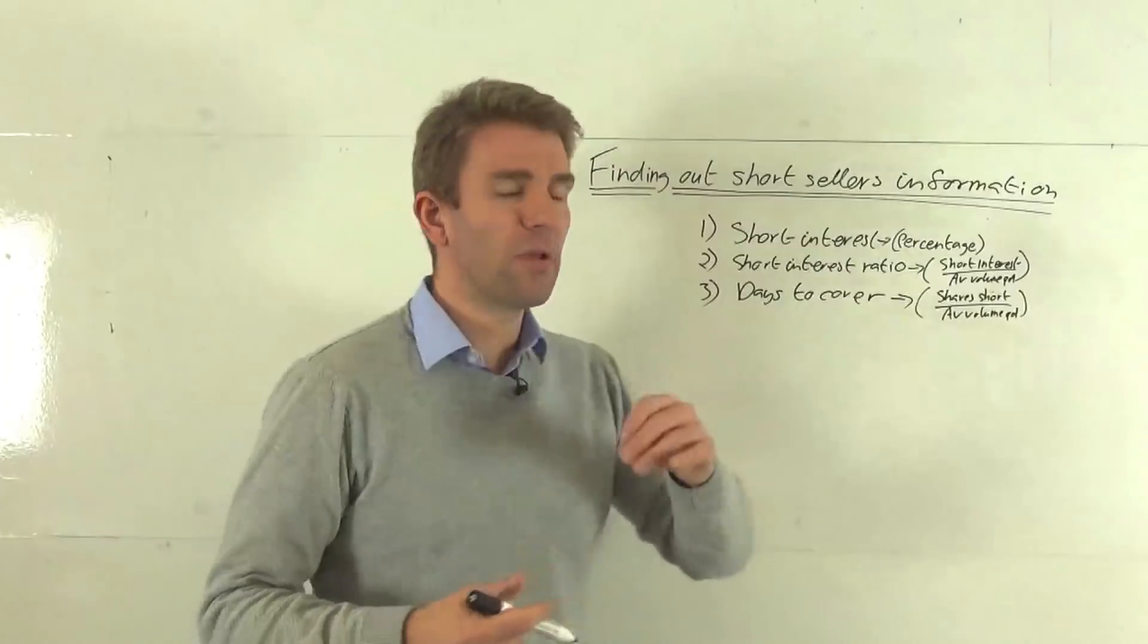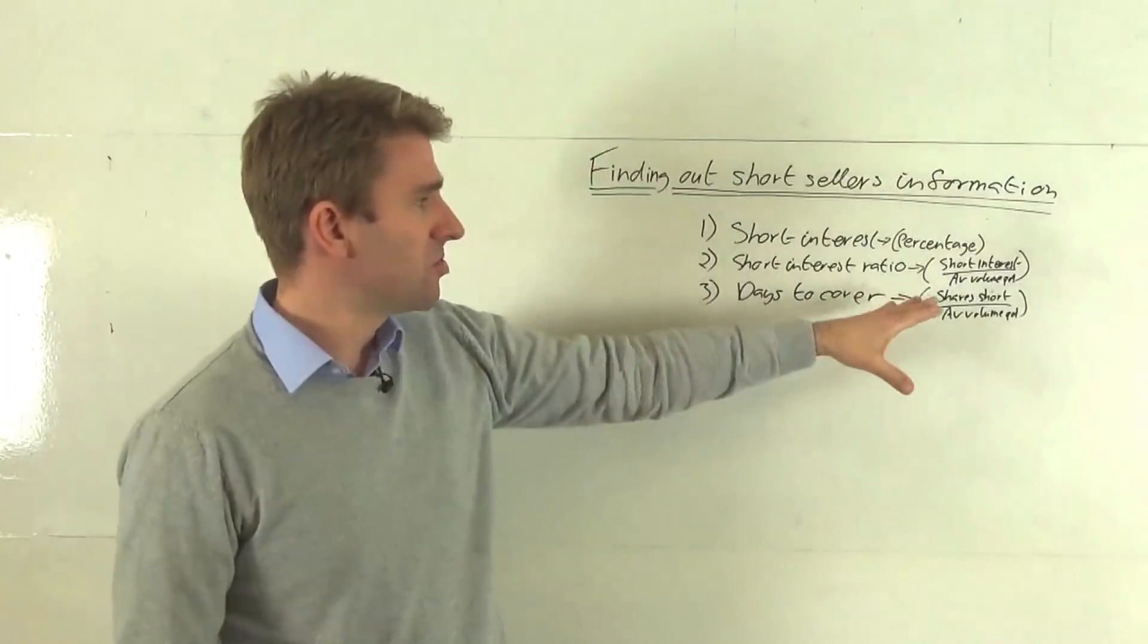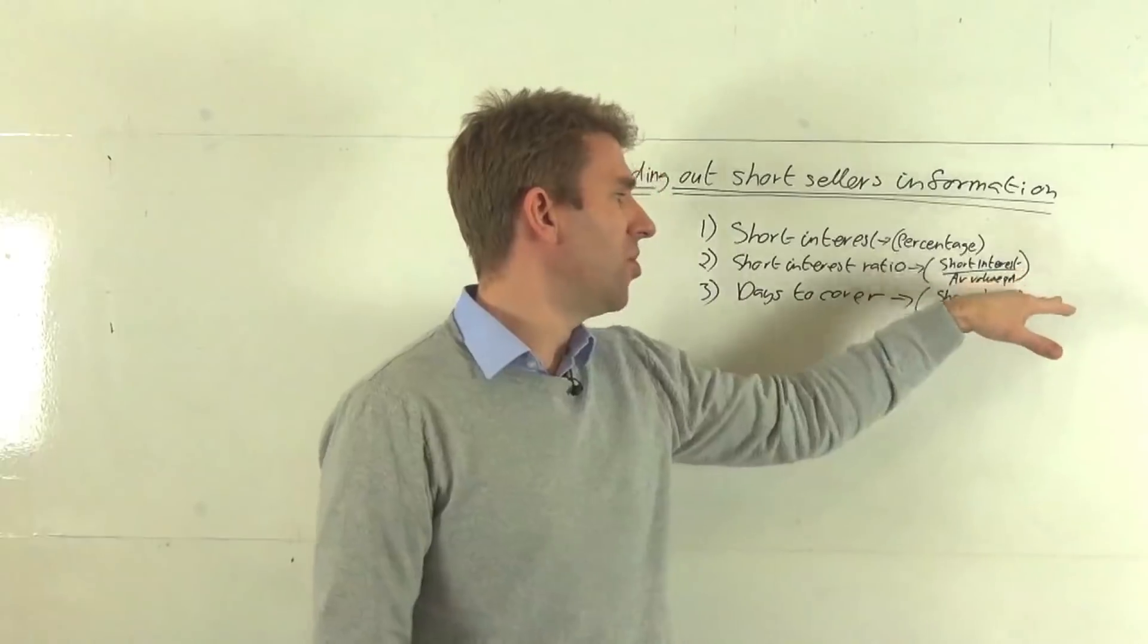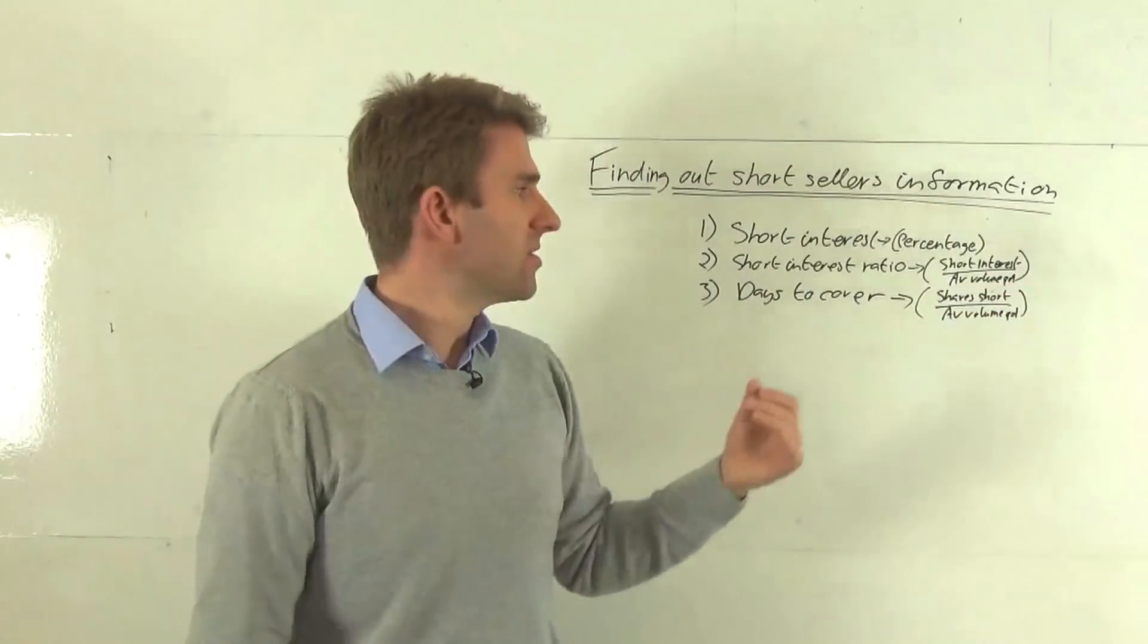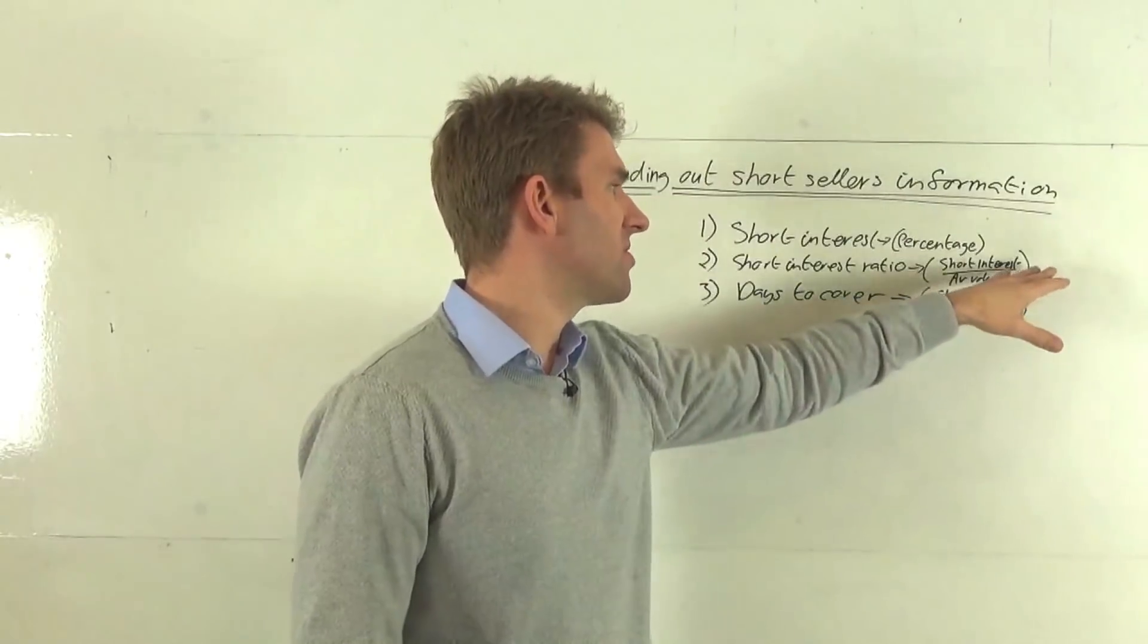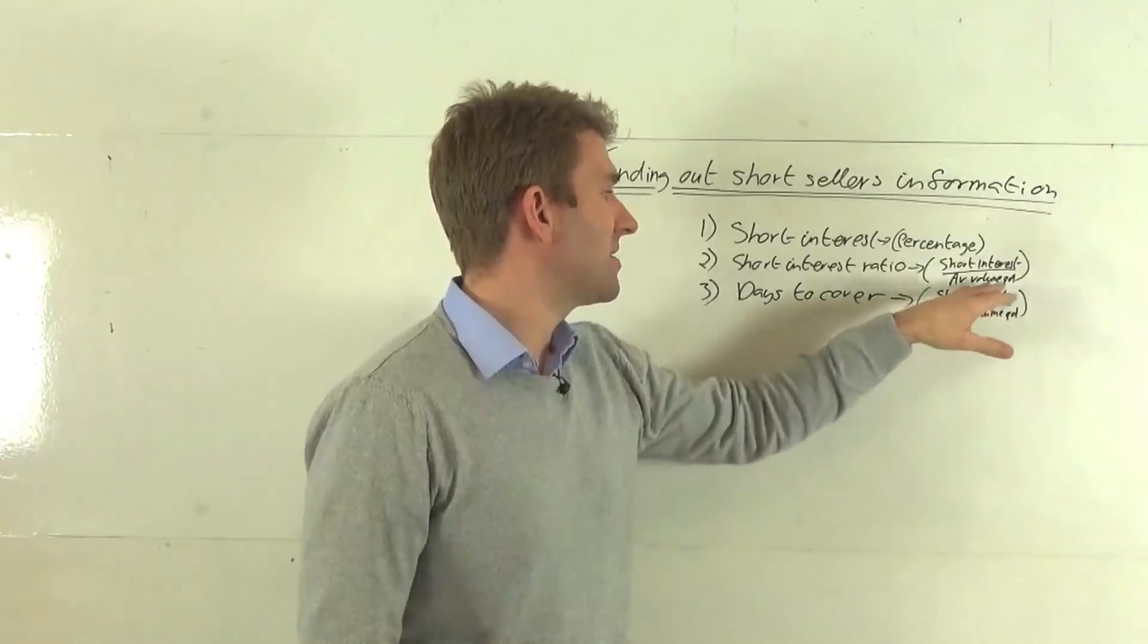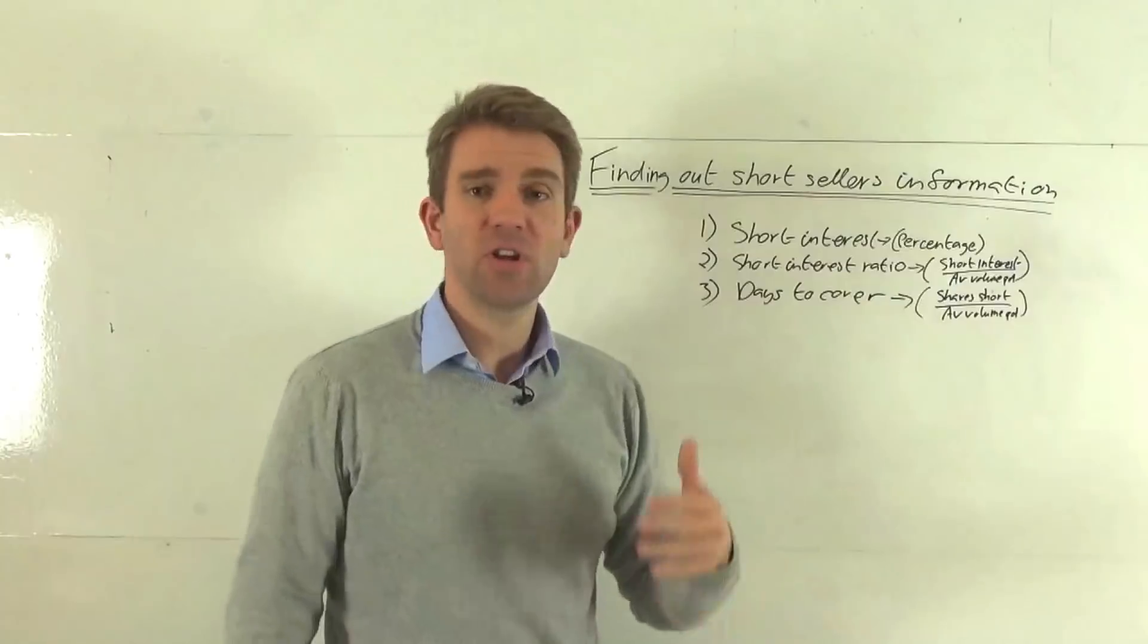The short interest ratio is a little bit more interesting. The short interest ratio is the short interest divided by the average volume per day. This really gives us - let's say we had a short interest of a million shares and the average volume per day is two million shares, then obviously the short interest ratio is going to be 0.5.